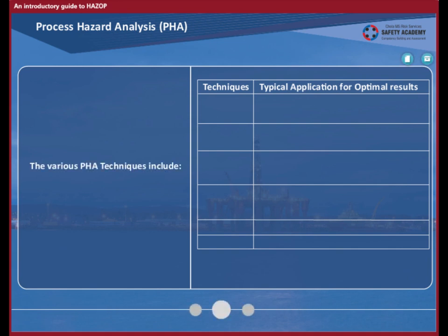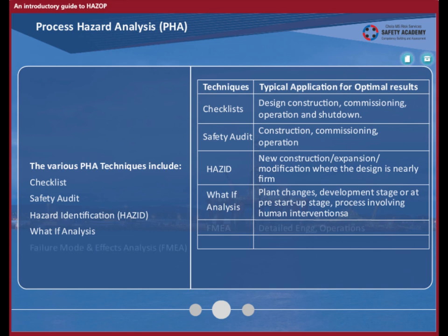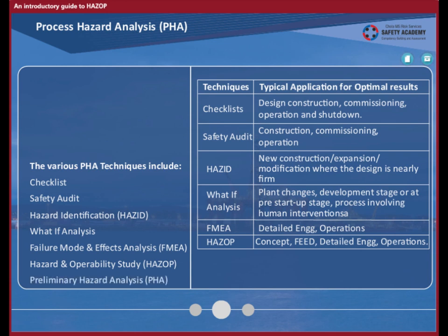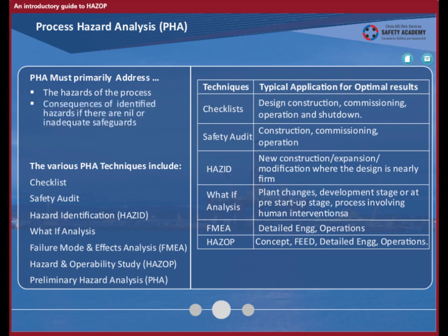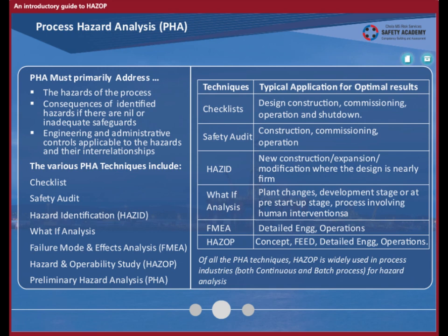Various process hazard techniques are available to us today, like checklists, safety audits, hazard identification, what-if analysis, failure mode and effects analysis (FMEA), hazard and operability study (HAZOP), and preliminary hazard analysis (PHA). PHA must primarily address the hazards of the process, consequences of identified hazards if there are nil or inadequate safeguards, and the engineering and administrative controls applicable to the hazards and their interrelationships. The table here shows you, against each technique, the best possible stage for its adoption or use. Of all the PHA techniques, HAZOP is widely used in process industries, both in continuous and batch processes, for hazard analysis.